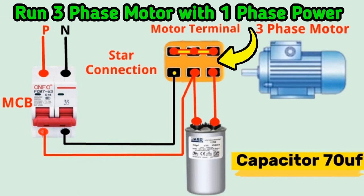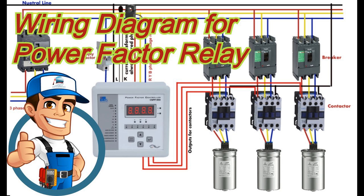Surge capacitors help suppress transient voltage spikes caused by lightning strikes, switching operations, or other electrical disturbances, preventing these transients from reaching sensitive equipment and causing damage. Surge capacitors have a fast response time, which allows them to quickly absorb and dissipate the energy from voltage surges, minimizing the impact on the electrical system and equipment. Surge capacitors are typically installed in parallel with the equipment or electrical loads they are intended to protect.